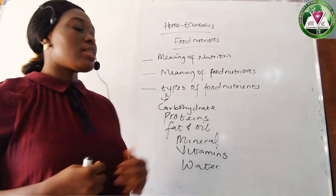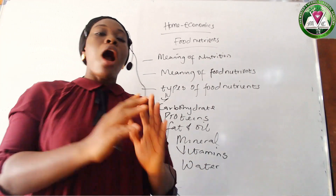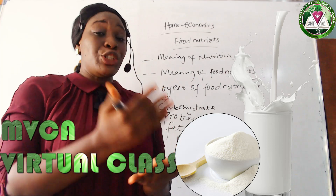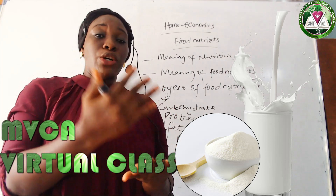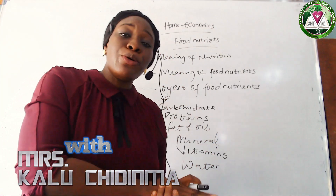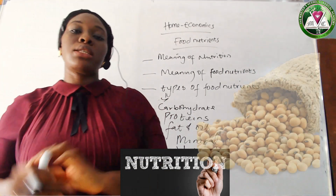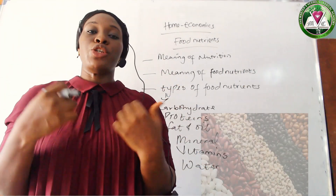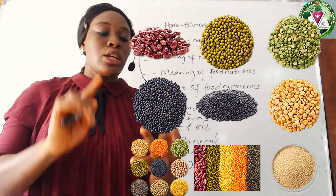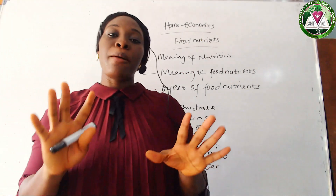What are the food sources of protein? We have animal protein and we have plant protein. Under animal protein, we have egg, milk, cheese, meat, and fish. Under plant protein, we have soya beans, beans, and the legume family.